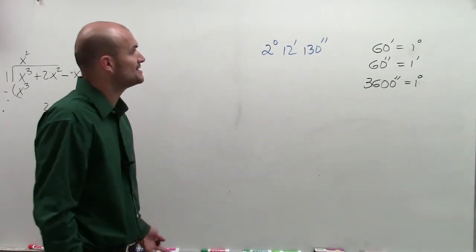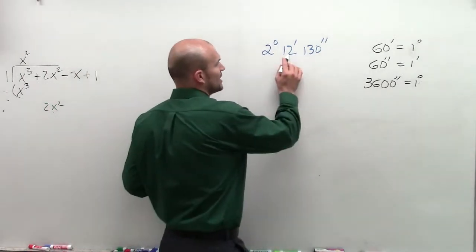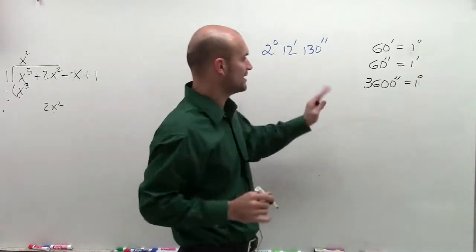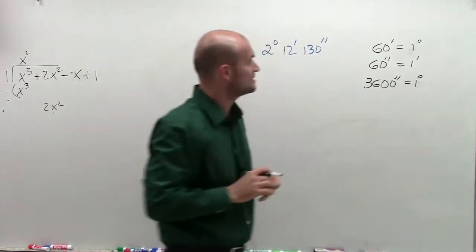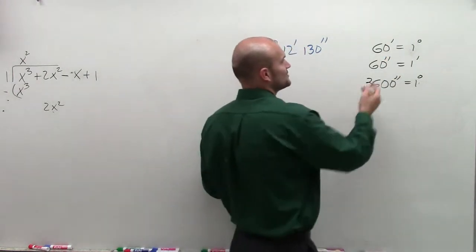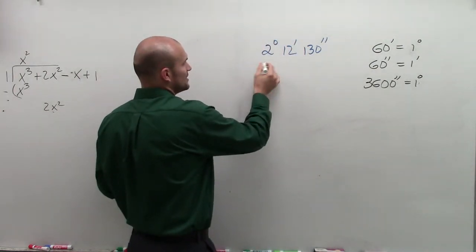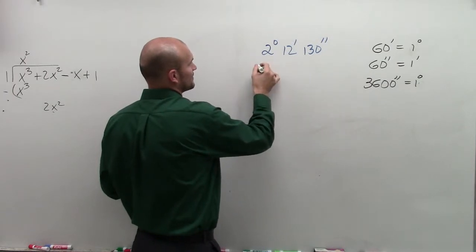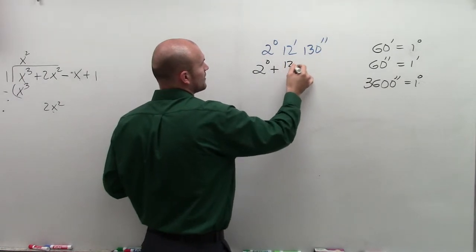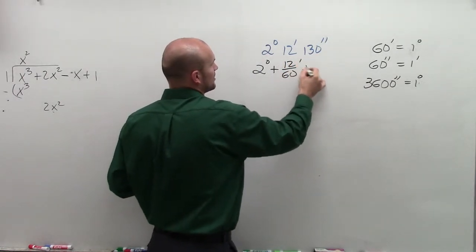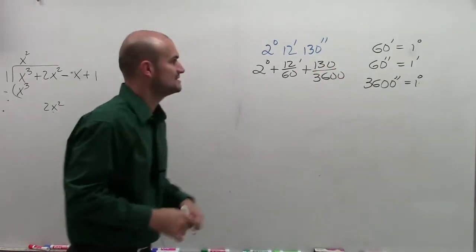So I have two degrees, 12 minutes, and 130 seconds. So to represent that, what we do is I need to figure out what the decimal approximation is there. So, like I said, 60 minutes out of how many total minutes? So I could really, sure, at the 60 minutes equals one degree. So what I'm going to do is I could write this like this, two degrees plus 12 out of 60 minutes plus 130 out of 3,600 seconds.